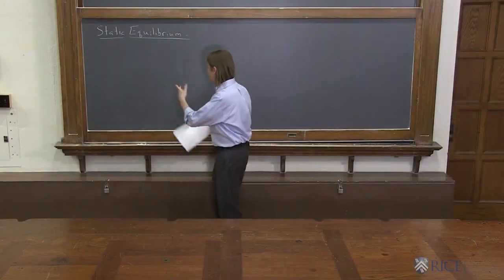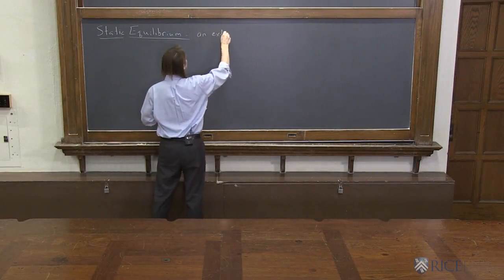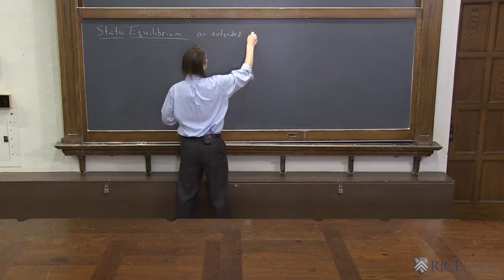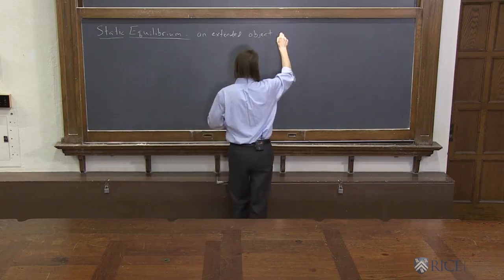Here's an area of mechanics we're going to talk about: static equilibrium. That is when you have an extended object, and by that I just mean not a point mass, but an object that is not moving.